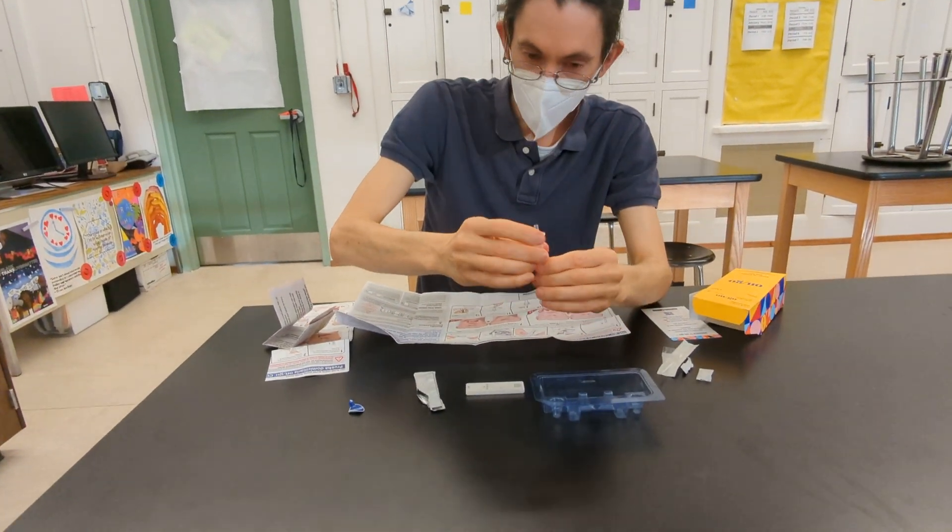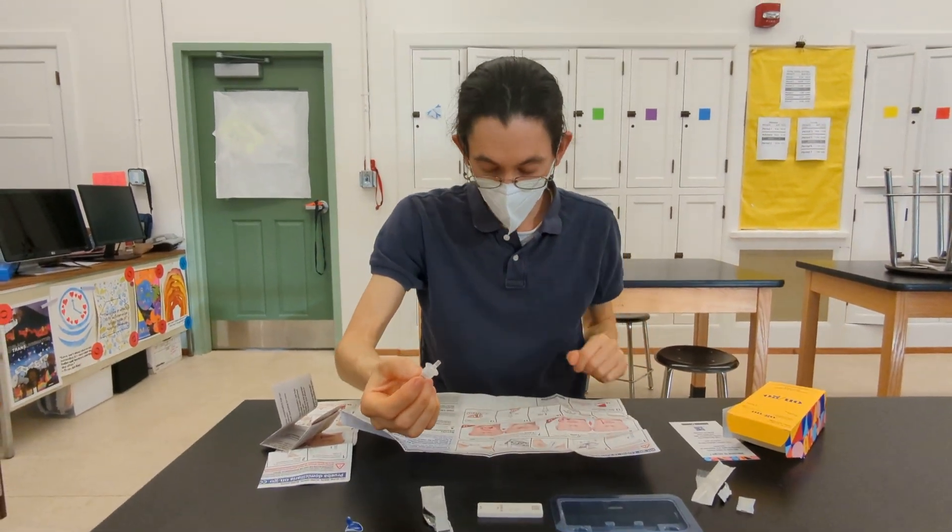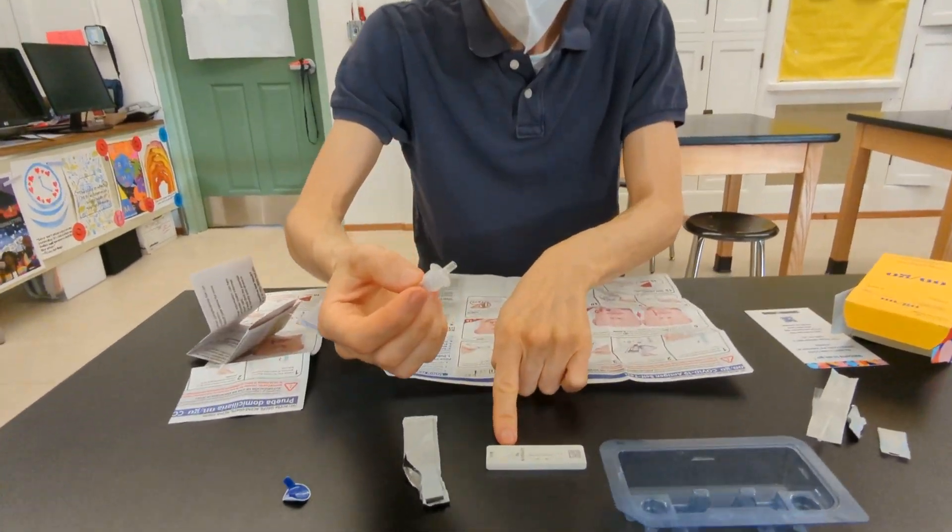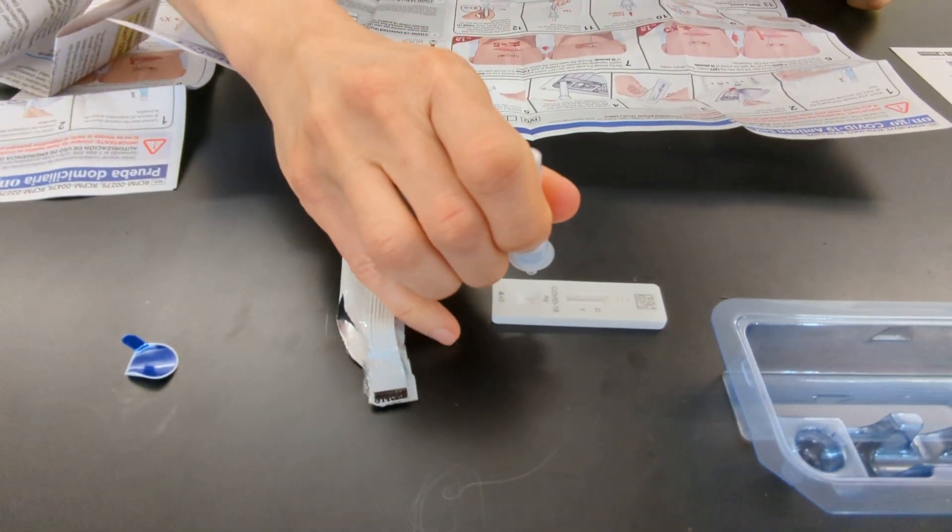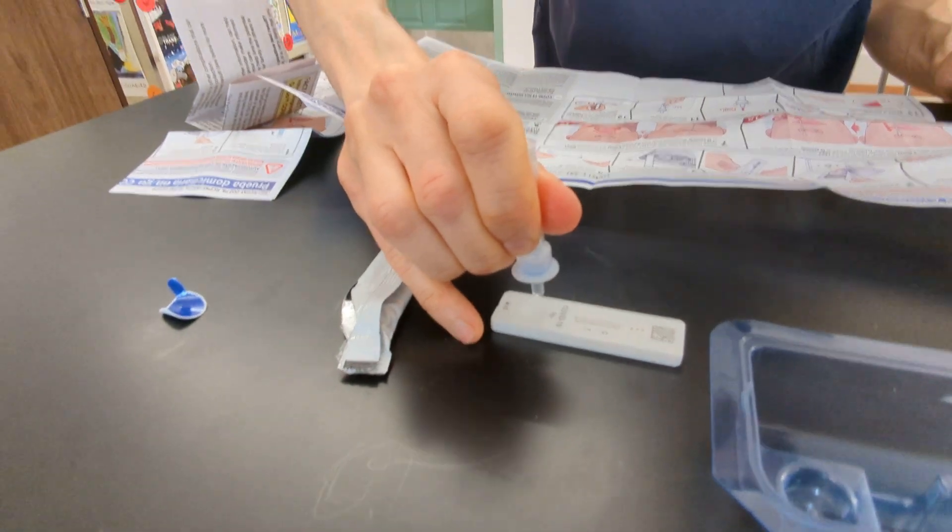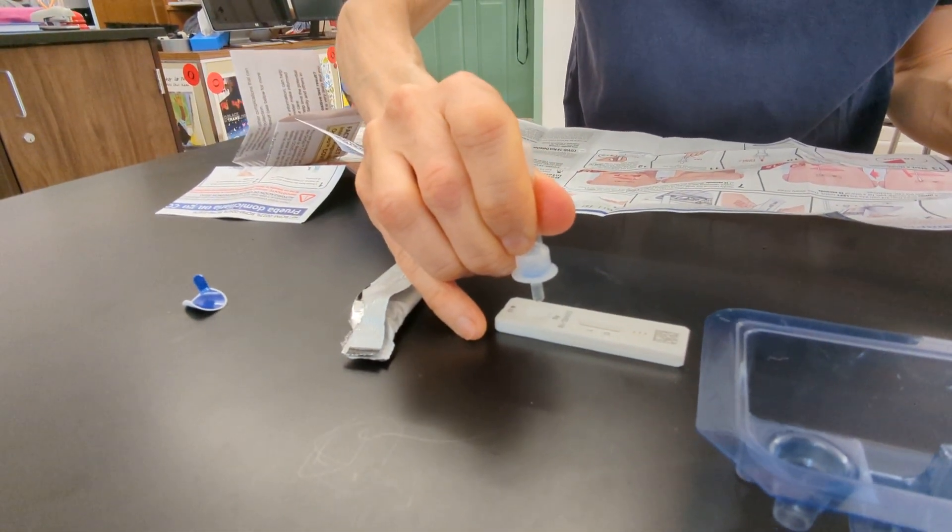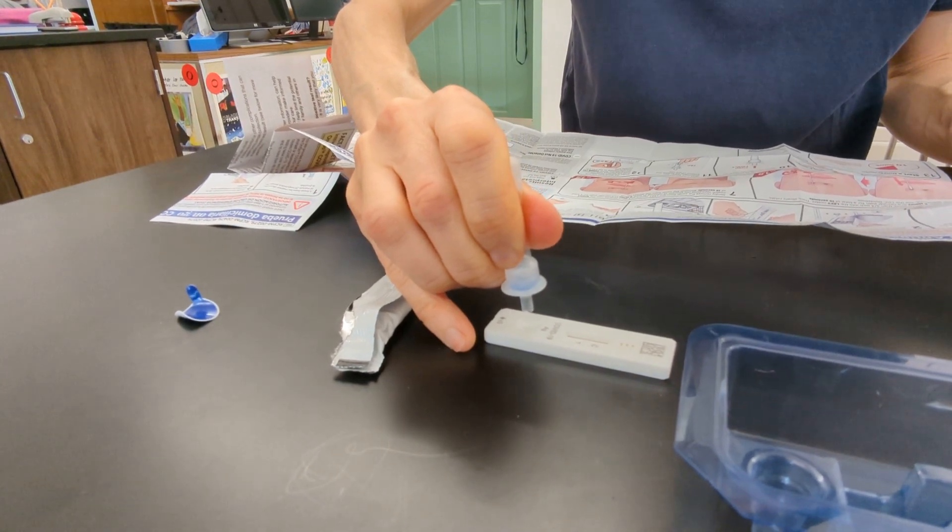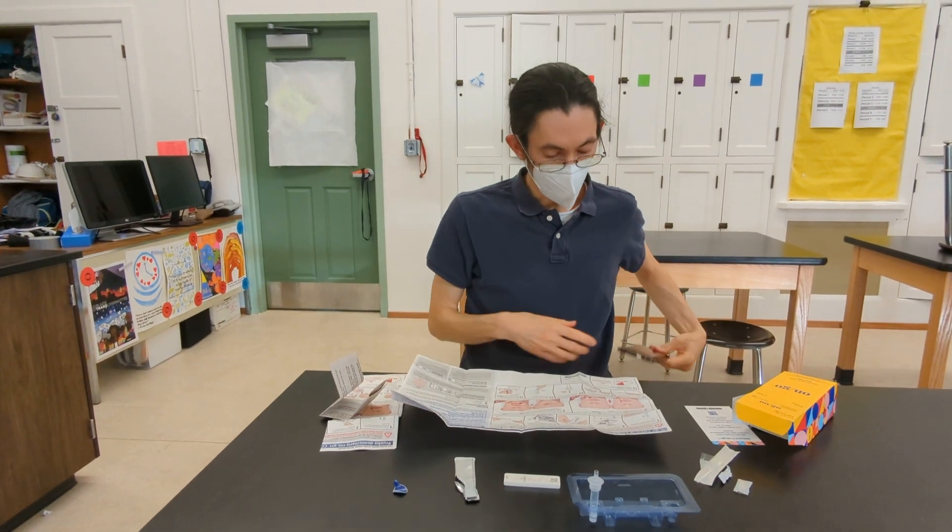Once you've done that, you're going to invert the extraction vial and place three drops in the test well. So let the drops fall freely. You don't want to touch the container to the test well.